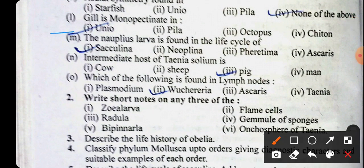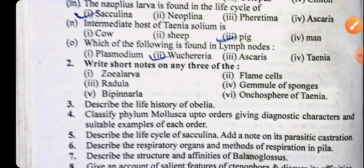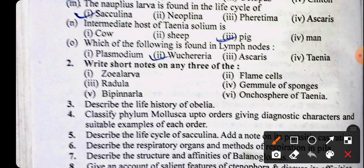Gill is monopectinate — the right answer will be the nauplius larva, which is found in the life cycle of Sacculina. The intermediate host of Taenia solium is the pig — that will be the right answer. Which of the following is found in lymph nodes? Wuchereria is found in the lymph nodes.